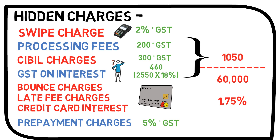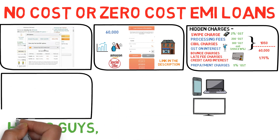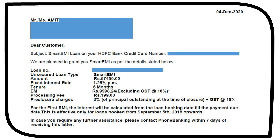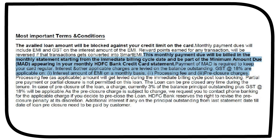So that is 1.75% higher than the one-shot payment of 60,000. As promised at the beginning of the video, allow me to share the terms and conditions of my 60,000 TV loan. To maintain privacy, I have blacked out the areas containing my personal information. As you would see, the loan amount is 57,450 against the purchase of 60,000. Interest is levied at 1.25% per month. Processing fee is 199 — almost 200 plus GST. And prepayment or pre-closure charge is 3% plus GST. If you check the highlighted portion of the terms and conditions, it states that failure to pay on time — that is, if you don't pay the credit card dues on time — charges and interest would be levied, as well as GST on the interest amount of EMI on a monthly basis, on processing fees, and on pre-closure charges.